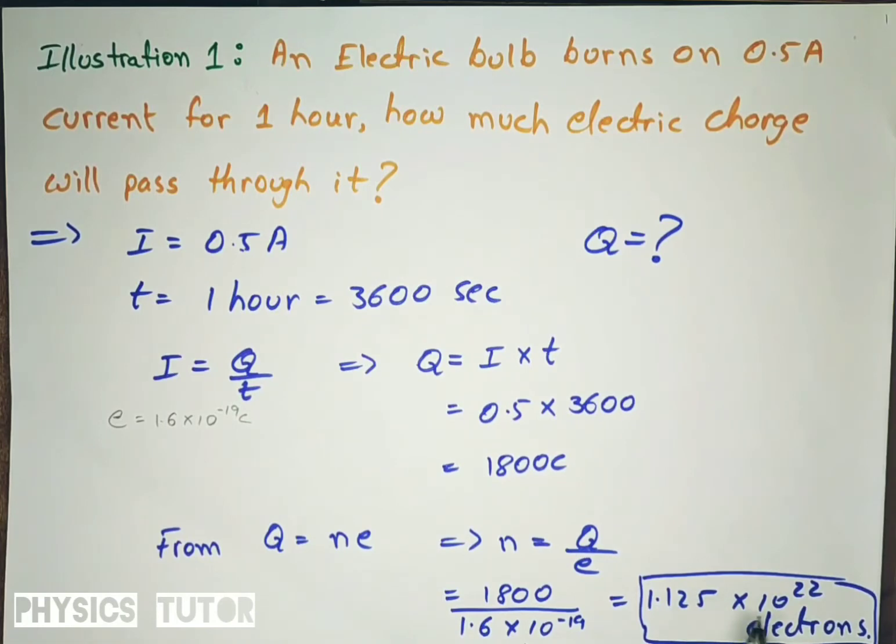That is, this many electrons would have passed through the bulb in one hour under 0.5 ampere current. So we can tell this is the charge passing through the bulb which was required to find.